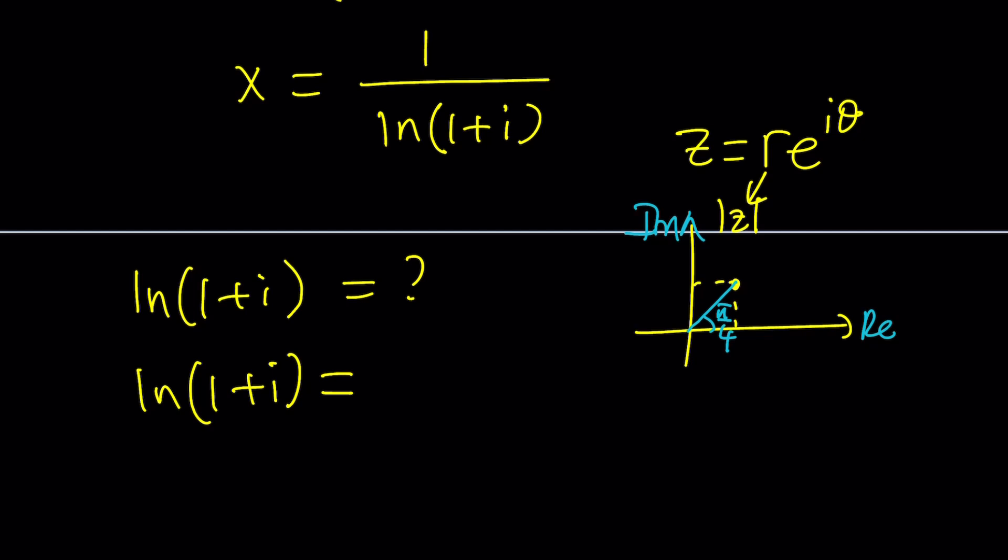And the modulus, the absolute value, is going to be √2 from the Pythagorean theorem. This is 1, 1, √2. So let's go ahead and write this as follows. We can put the r outside, √2, but we have to put the ln first. So ln of what? √2·e^(iπ/4). Complex form.